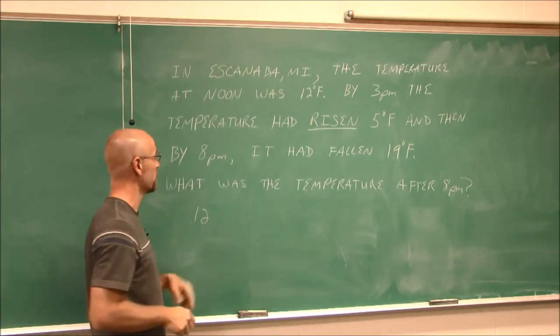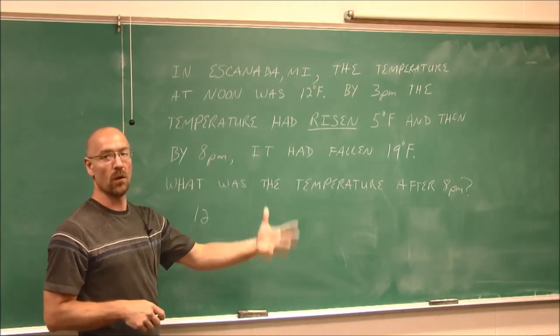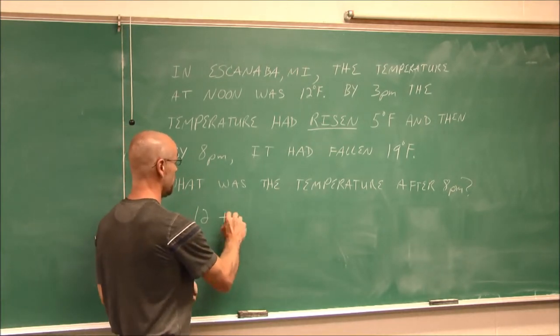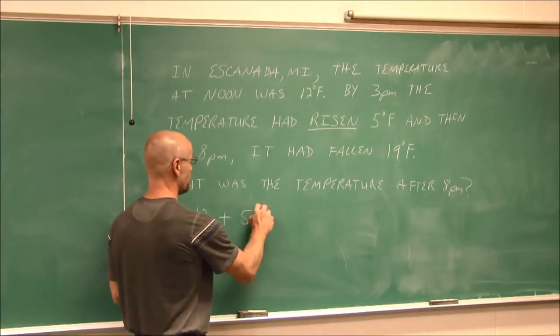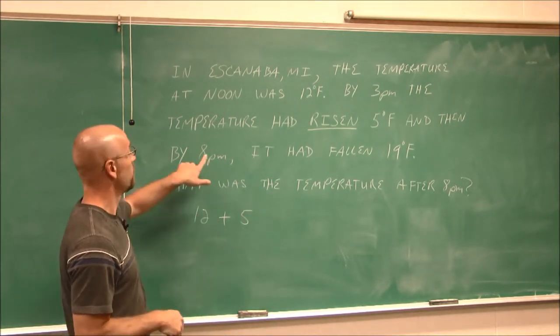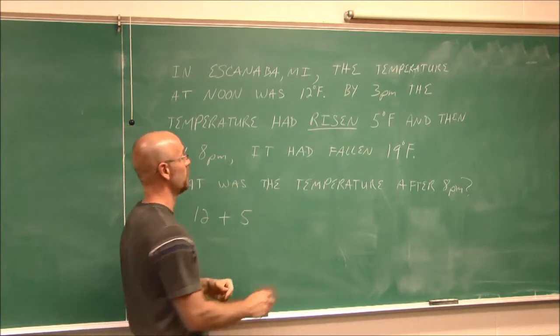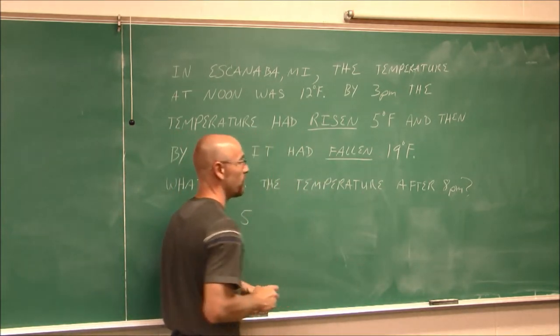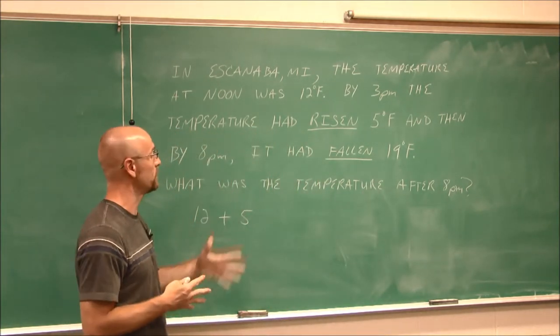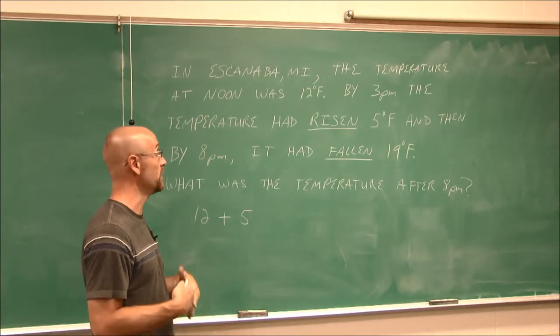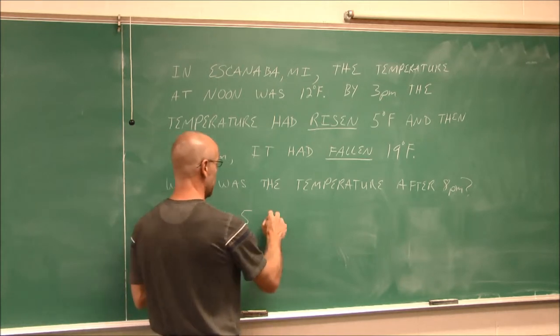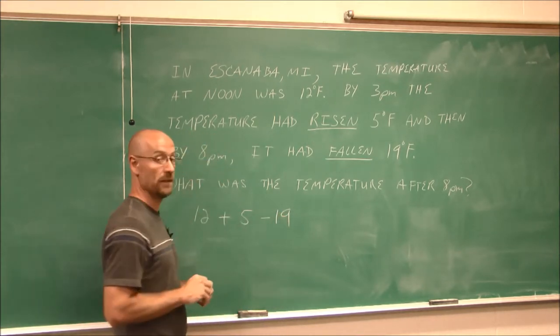So we started at 12 degrees Fahrenheit, and we'll just put 12 here. And then we know it rose, that's given information, it's telling me it's increasing or adding by 5 degrees. Then it says by 8 p.m., it had fallen. I'm going to highlight that. Fallen. What's the temperature doing? Well, if the temperature is falling, my temperature is decreasing. We decrease by 19.